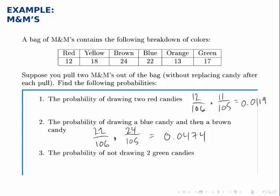And then finally, the probability of not drawing two green candies. Now, if we try to do this one directly, it'll get complicated, but noticing the word not, we say, well if we calculate the probability that we do draw two green candies and subtract that from one, we'll have the probability of not drawing two green candies.